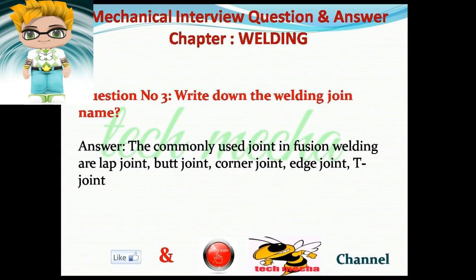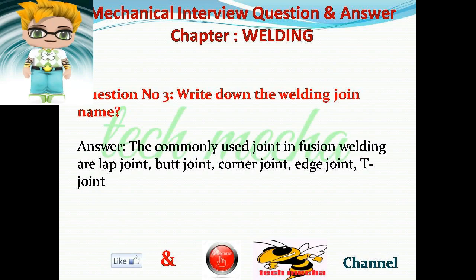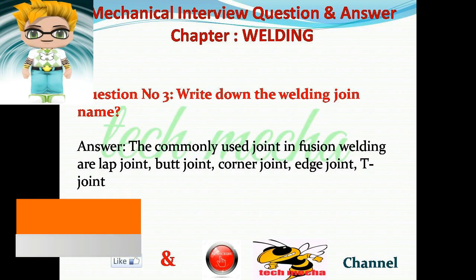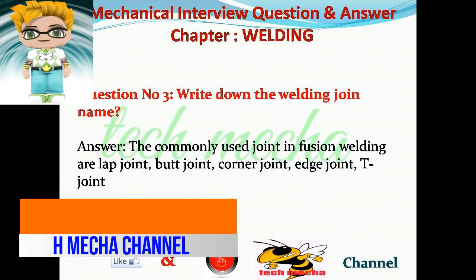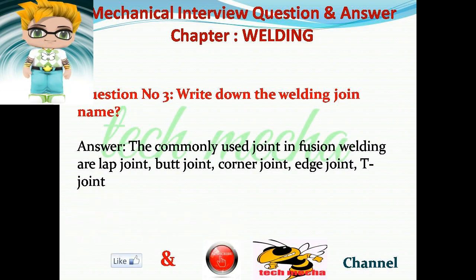Question number three: Write down the welding joint names. Answer: The commonly used joints in fusion welding are lap joint, butt joint, corner joint, edge joint, and T-joint.